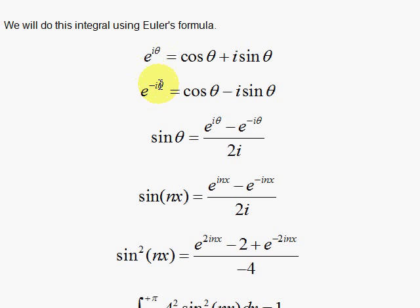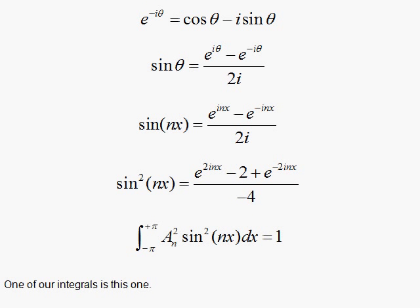Here, if I write this with the negative iθ, since the sine is an odd function, it has a minus sign here. Cosine is an even function, not to worry about the minus sign. Subtracting the lower one from the top one, you get 2i sin θ. And if I divide by 2i, I have my sin θ. Put in nx and then square it. And we're ready to do our integral.